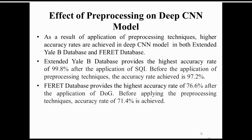We applied pre-processing techniques to improve the accuracy rate for both the FERET and Extended Yale databases. For the Extended Yale database, our model provided the highest accuracy rate of 99.8% after application of SQI pre-processing, compared to 97.2% without pre-processing — an improvement of 2.6%. For the FERET database, the highest accuracy rate was 76.6% after application of DoG pre-processing, compared to 71.4% without pre-processing.